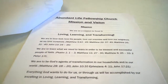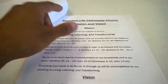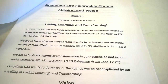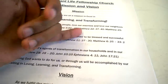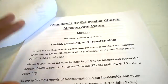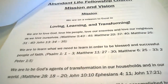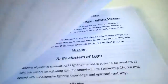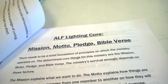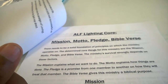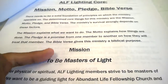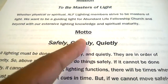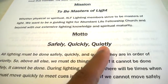The first thing we talk about in the handbook is the church itself. That's the name of our church: A Modern Life Fellowship. That's their mission — loving, learning, and transforming — and they have a vision. We want to talk about the church first because we're part of the church, so we need to make sure we understand where we're coming from. And so we have a mission to be masters of light, and we have a motto: this is how we do lighting — safely, quickly, and quietly.